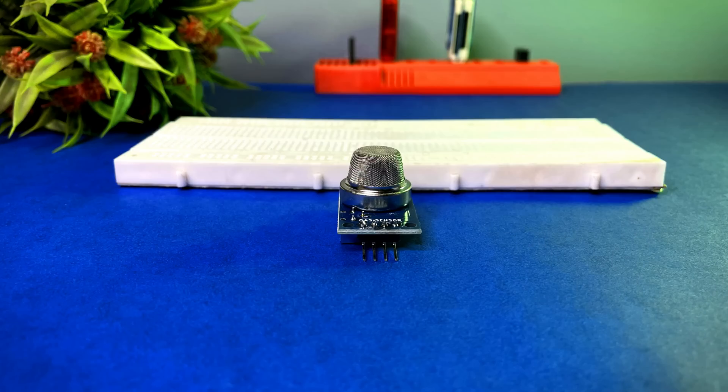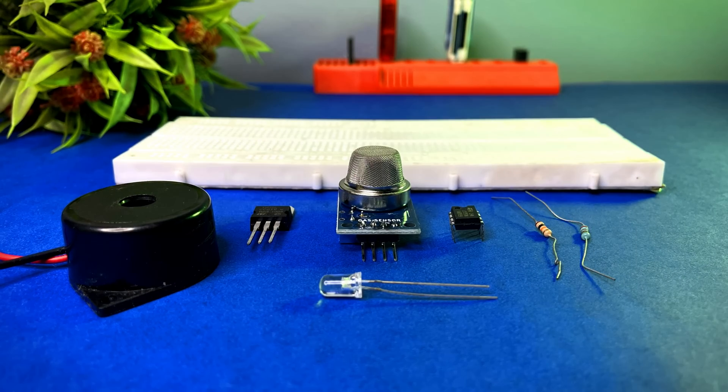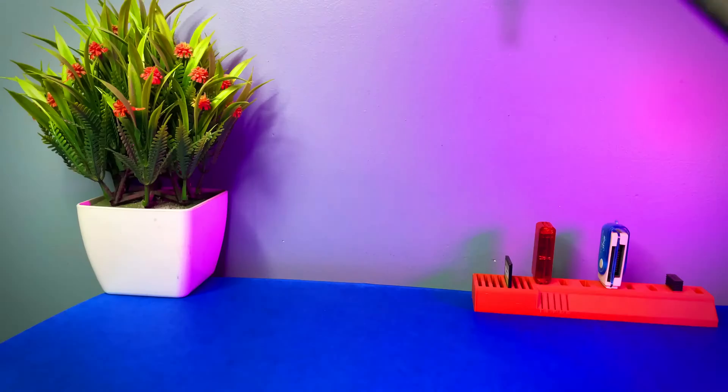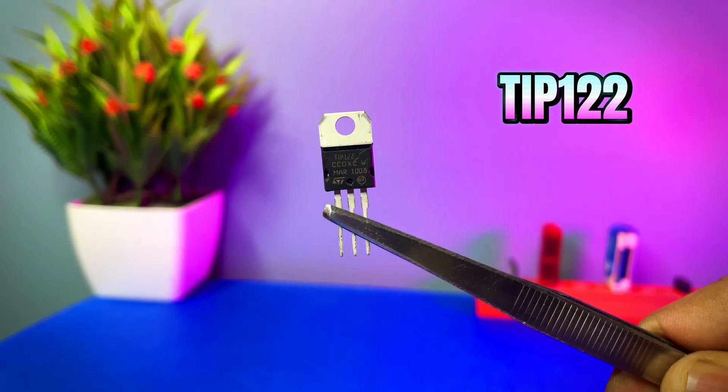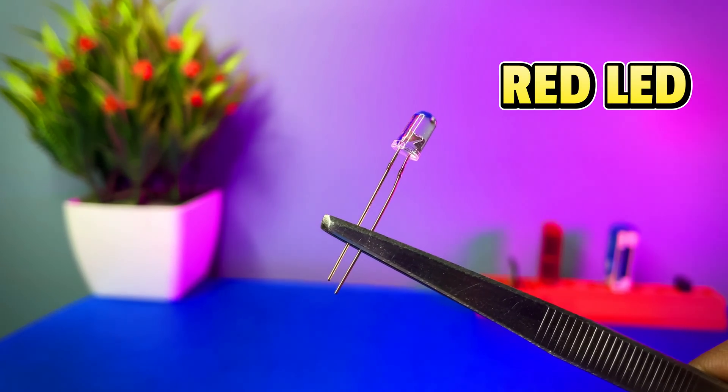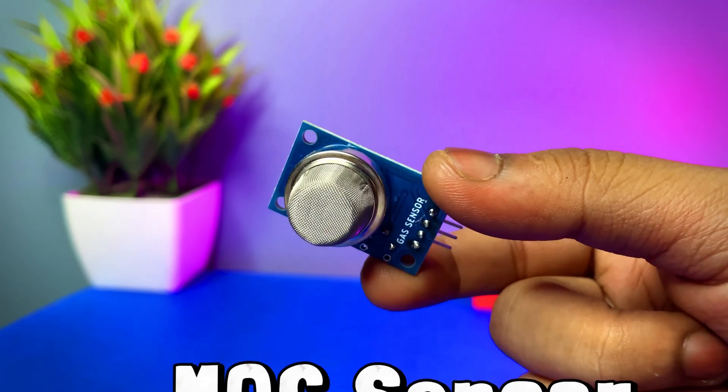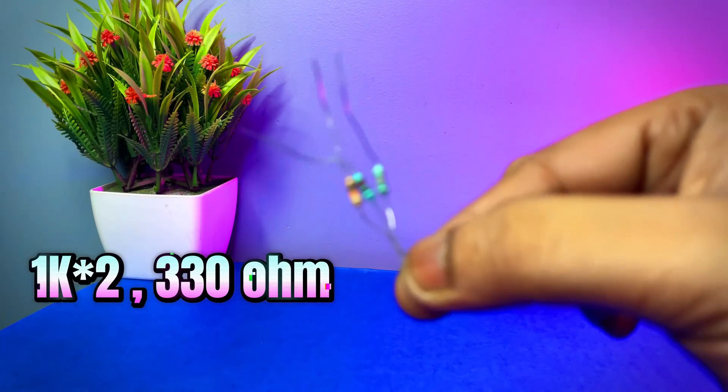For making this project we need some basic components, so let's check one by one. We need an LM393 IC, next TIP122 transistor, a red LED for indication, MQ6 gas sensor, a few resistors, and finally a big size breadboard.